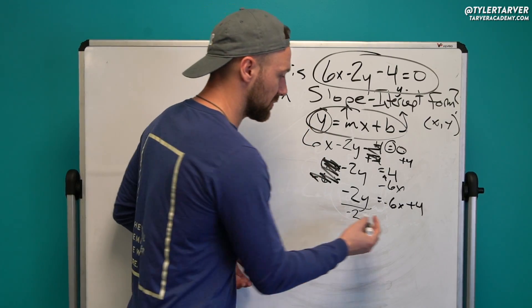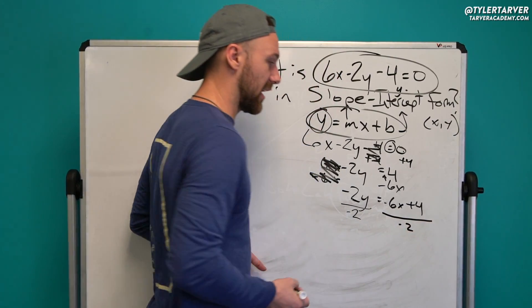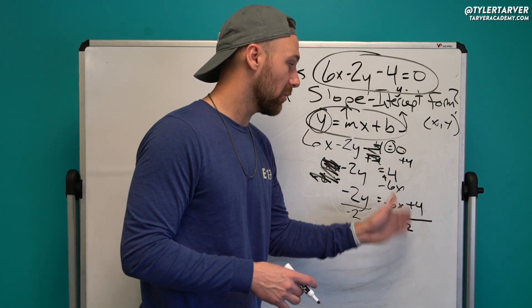And here's another thing people will often mess up. When I divide it, I've got to divide everything by negative 2. So if I do it to this side, I have to do every single monomial over here. That's a monomial—it's separated by that plus sign. That's another monomial.